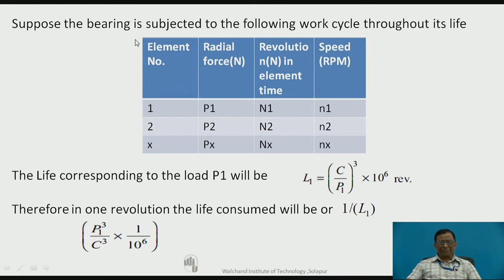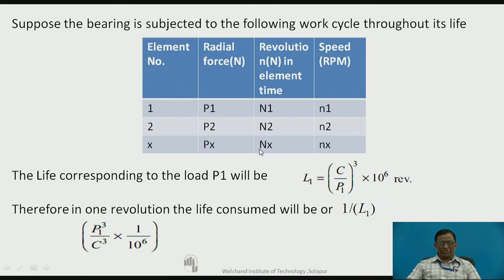Let us consider an example of a ball bearing subjected to a work cycle consisting of x elements. In element 1, the load acting is P1 as a radial force and under this load the bearing completes n1 revolutions. Similarly, in the second element, load P2 acts and the bearing completes n2 revolutions. Likewise, we can define x elements subjected to load Px, completing nx revolutions. This is how one work cycle consists of x elements, each having different force components and number of revolutions completed under that loading condition.